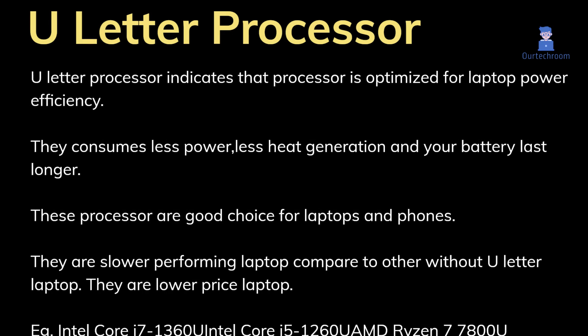The U letter indicates that the processor is optimized for laptop power efficiency. These processors consume less power, generate less heat, and your battery lasts longer. They are a good choice for laptops and phones. However, they are slower performing compared to laptops without the U letter, and are typically found in lower-priced laptops.